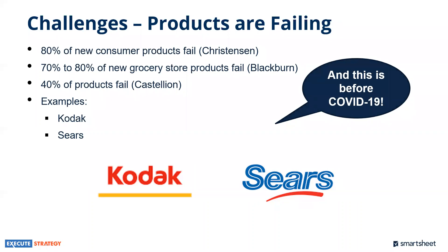Clayton Christensen from Harvard did a study showing about 80% of consumer products failed in their first year, looking at over 30,000 products. Isaac Blackburn, a professor at the University of Toronto, found that 70 to 80% of grocery products fail. George Castellonian and Stefan Markham did a more scientific study and found 40% of products fail — still a remarkably high number. We've seen this with Kodak, who missed the switch from chemical-based to digital photography, and Sears, who struggled in the retail space with products that were not successful.